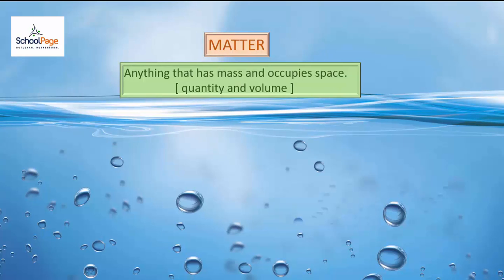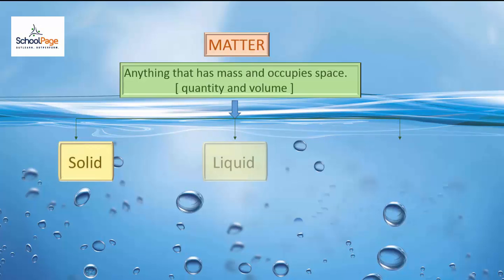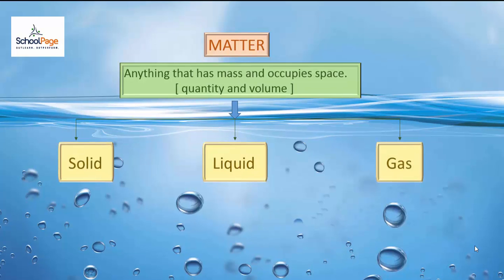Matter around us exists in three different forms as solid, liquid and gas. Matter exists in different states because the arrangement of atoms or molecules is different in different states.